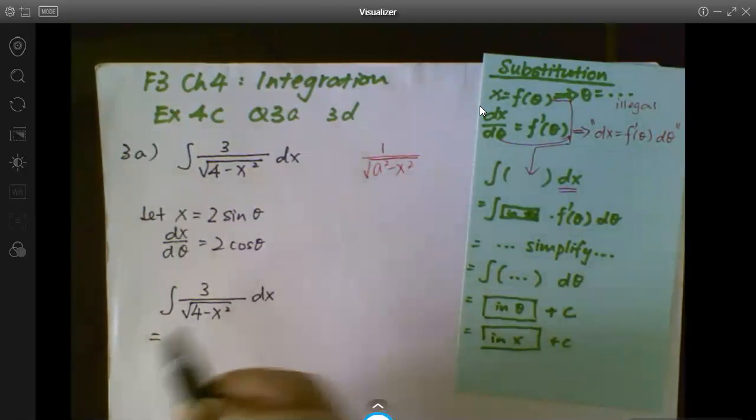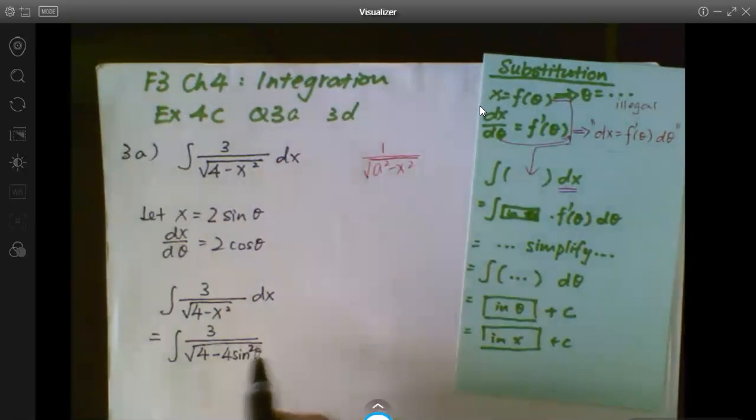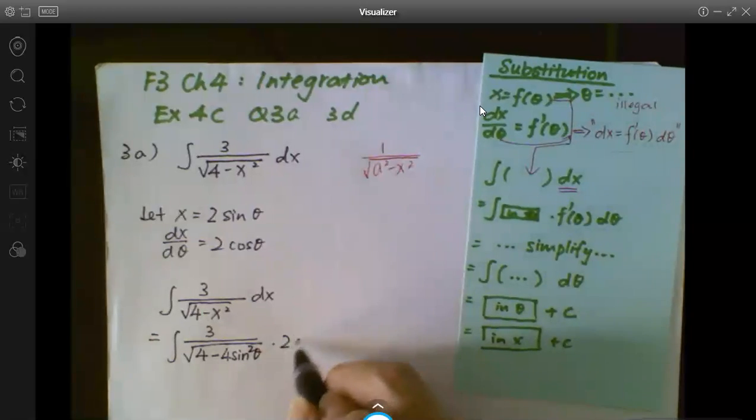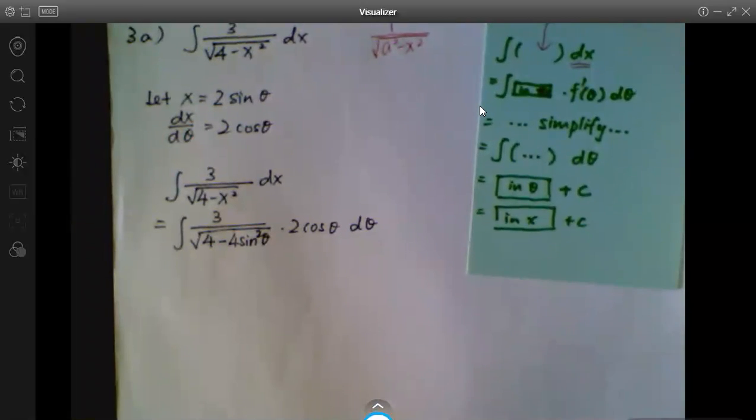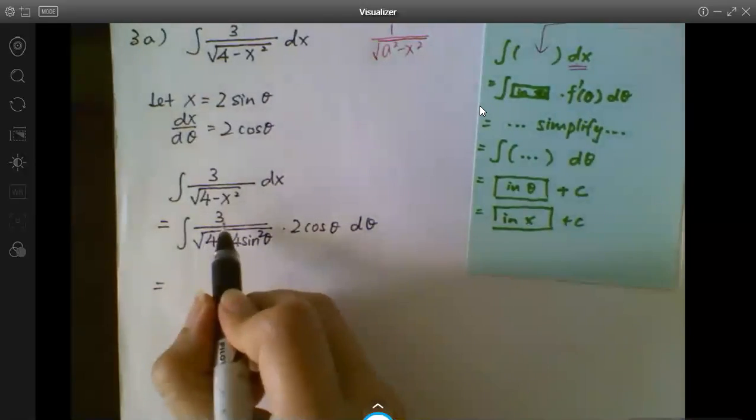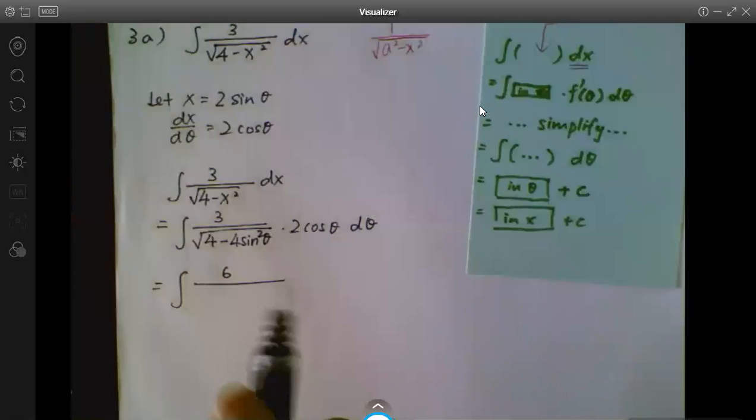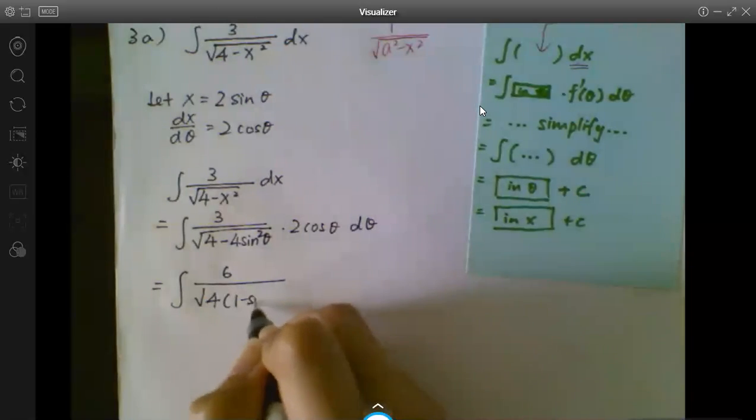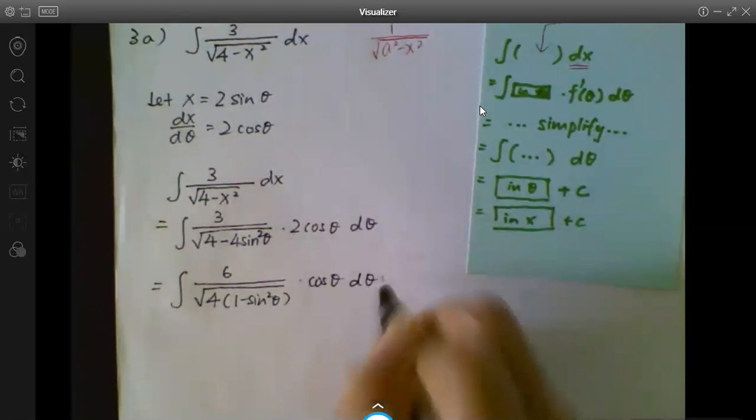Okay, I will substitute in my x: square root of 4 minus 4 sin²(θ), correct? Then I substitute my dx, which is 2 cos(θ) dθ. Okay, after that is simplification. So 2 and 3 together make 6. Okay, inside the square root, I will take out 4: 1 minus sin²(θ). Here, the cosine is still there.